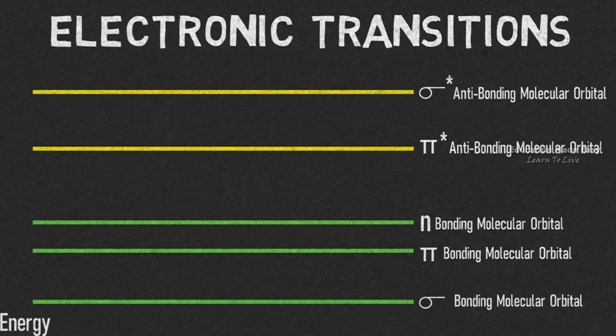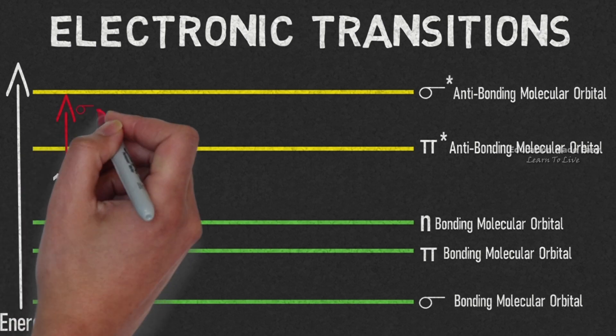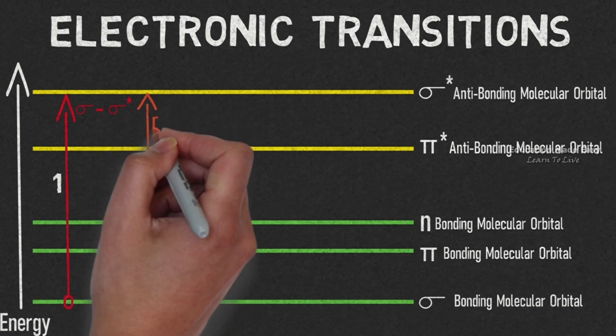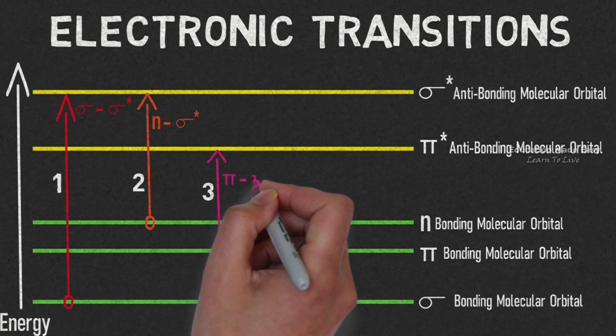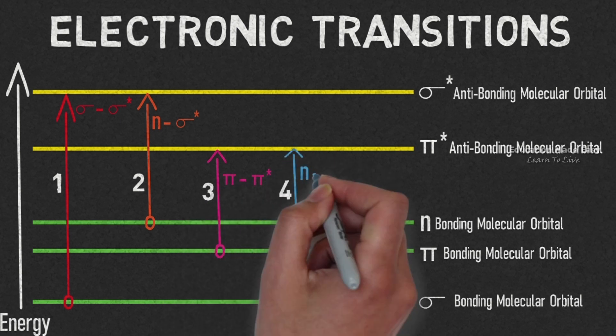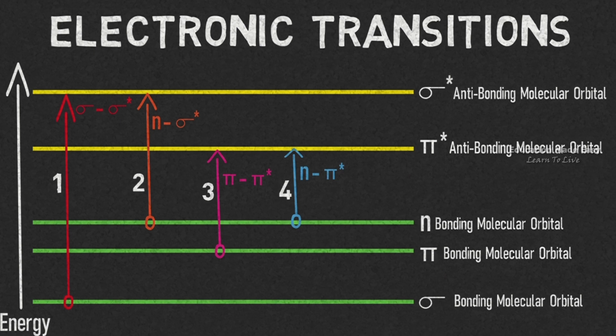The energy of these molecular orbitals is increasing in this direction. There are four types of electronic transitions: sigma to sigma star, n to sigma star, pi to pi star, and n to pi star. In all these four electronic transitions, the electrons are moving from bonding molecular orbital to anti-bonding molecular orbital.